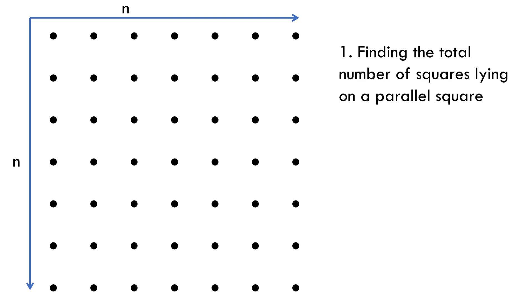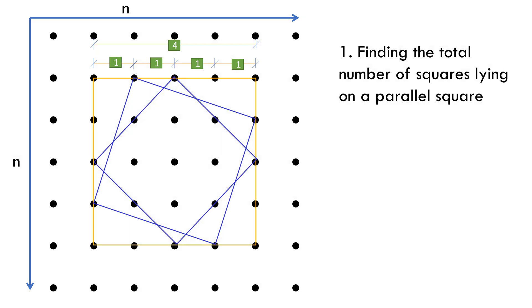For example, let's choose this parallel square at random. It's a 5x5 square grid with side 4 units. Let's see how many squares will be lying on its sides. So, there will be this, this, this - that is three tilted squares lying on it. And don't forget the fact that it itself also lies on its sides.